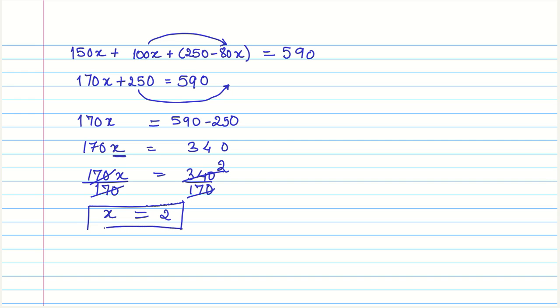Now we got the value of x and we are going to use this to find out the number of notes. The number of £50 notes is 3x. So the £50 notes equal 3 times x or 3 times 2, that gives us 6.